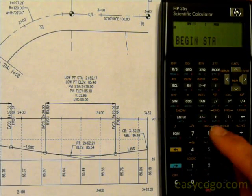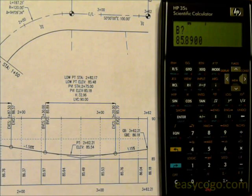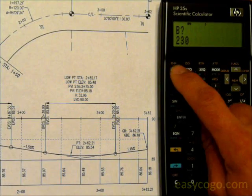It asks for the beginning station. We'll use the sample here, and that is 2 plus 30, press RS.